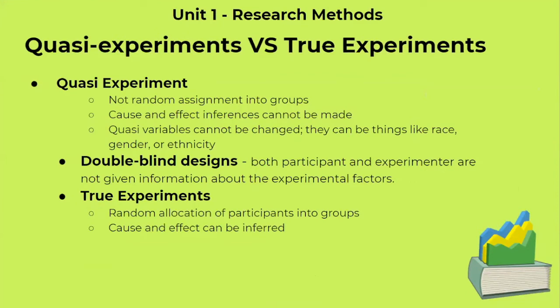Quasi-experiments versus true experiments differ mainly in participant allocation. In quasi-experiments, participants are not randomly assigned into groups, while in true experiments, participants are put into groups randomly. In a quasi-experiment, the cause and effect cannot be changed — this could involve things like race, gender, or ethnicity, because as a researcher you cannot demand a participant to change their race, gender, or ethnicity to participate. In true experiments, cause and effect can be inferred. Double-blind designs are when both participants and experimenters do not know the information about the experimental factors — they do not know who is in the control group and who is in the experimental group.